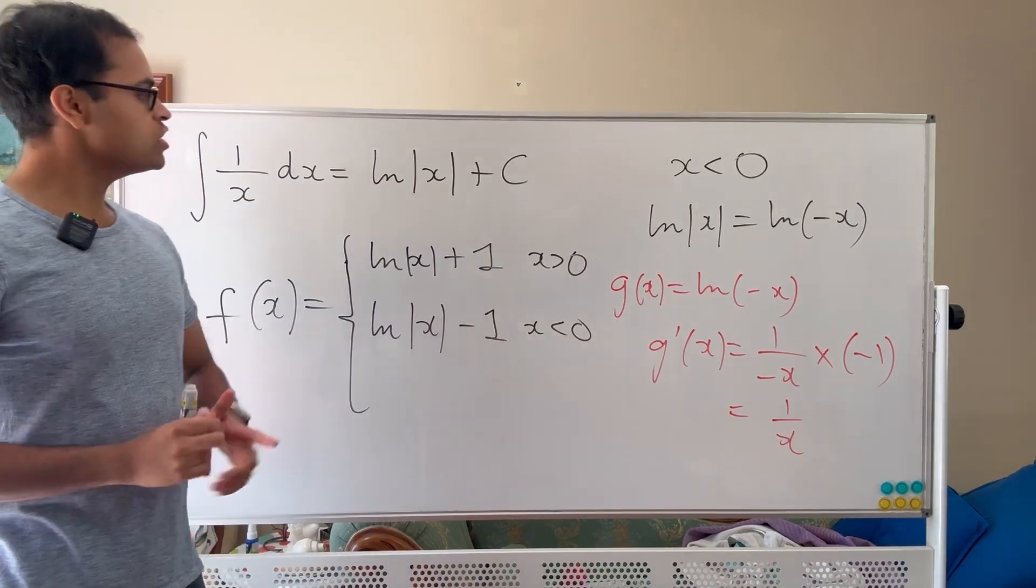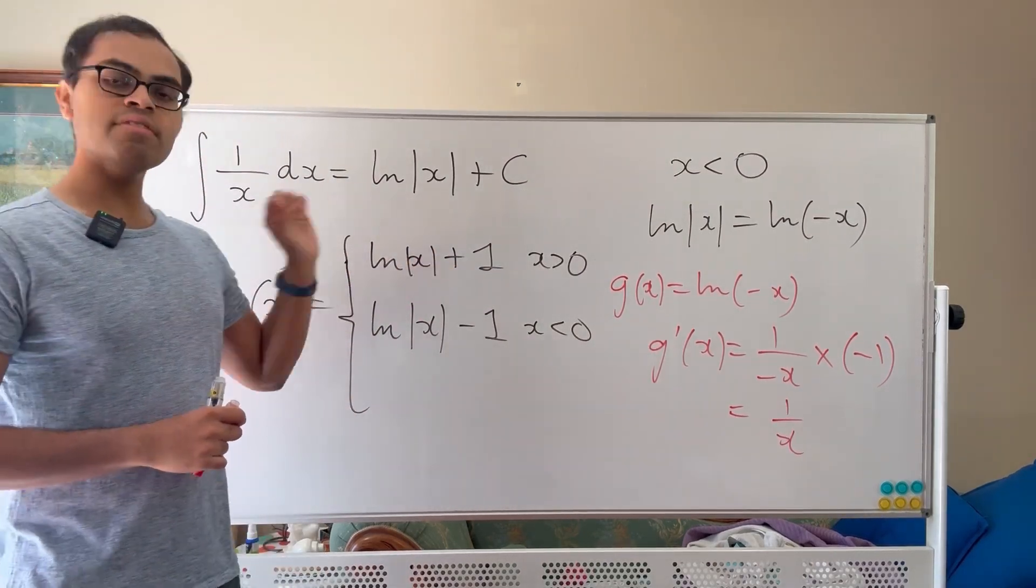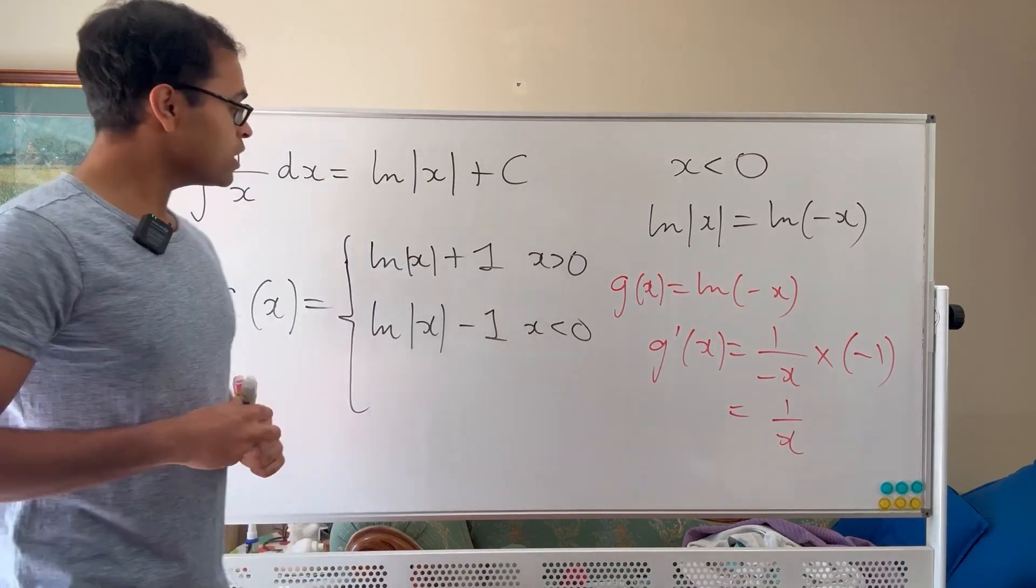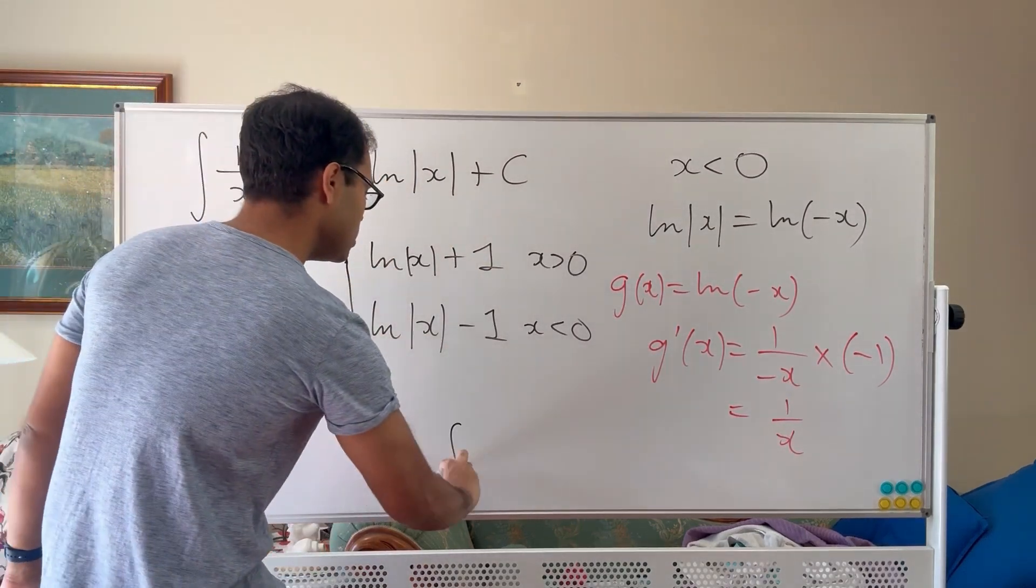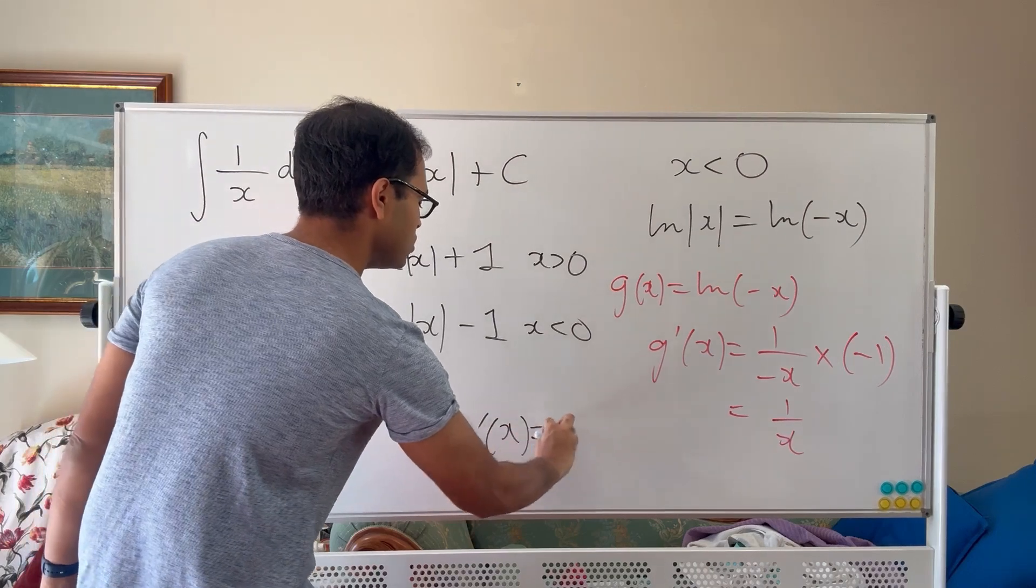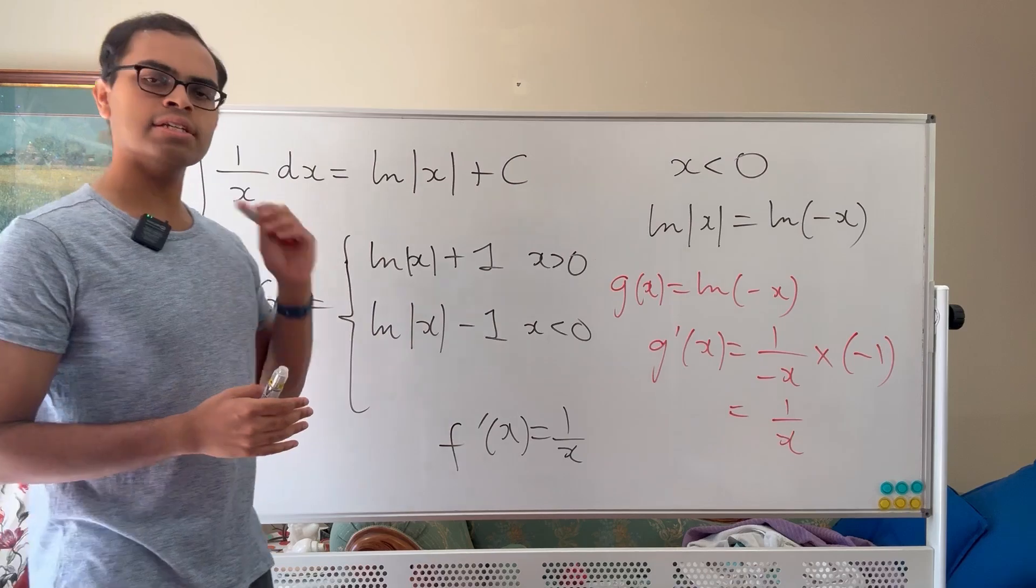This function is not log absolute value x plus a constant. However, its derivative is equal to 1 over x, because for each piece separately we do the same thing we just did to see that f prime of x is equal to 1 over x.